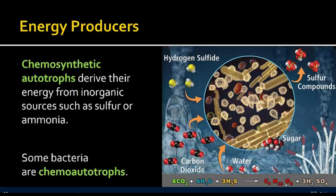An example of chemosynthetic autotrophs are bacteria — not all bacteria, but some. They tend to be organisms found in areas like deep ocean trenches where there's not a lot of sunlight, so they have to rely on getting energy from a different chemical reaction.